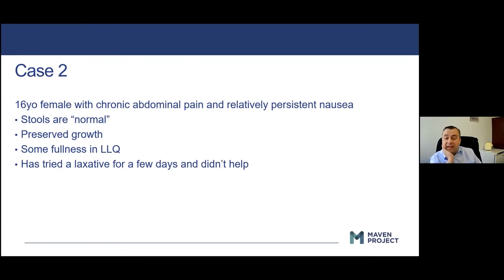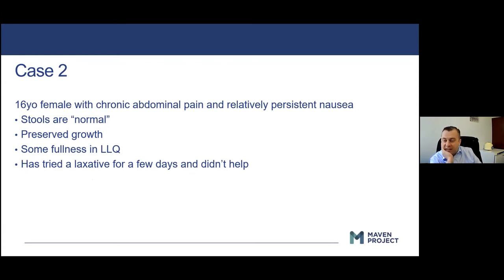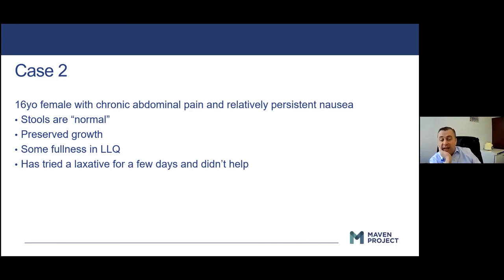The next case: a teenager who comes in with belly pain for six months and has been nauseous, probably more in the mornings — sometimes impacting breakfast, but never horrible and not really affecting daily life. She goes to school, does activities. It happens on weekdays, weekends, and vacations. She describes stools as normal, weight and height gains look totally fine. On exam there's a little bit of fullness in the left lower quadrant. She says her stools are normal and she tried an over-the-counter laxative for a few days and it didn't help, so it can't be constipation.